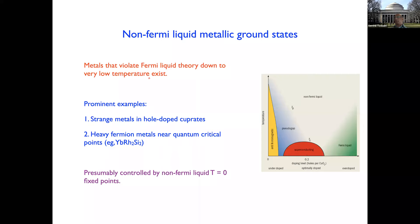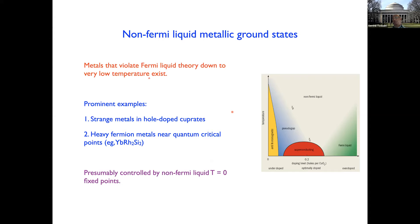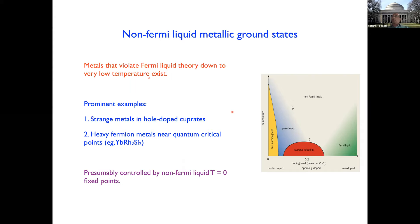Given the low temperatures to which this violation of Fermi liquid theory is seen, it's natural to presume that the non-Fermi liquid physics is controlled by a zero-temperature fixed point that is a non-Fermi liquid. This is what I'm going to be interested in in this talk. One of my dreams for the Ultra Quantum Matter collaboration is that during its lifetime, perhaps we will actually figure out what's going on in systems like these — for instance, understand the strange metal regime in the cuprates.